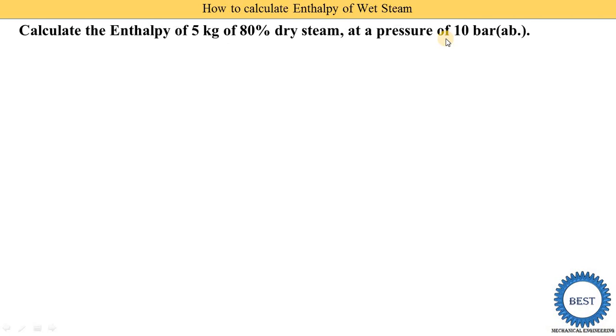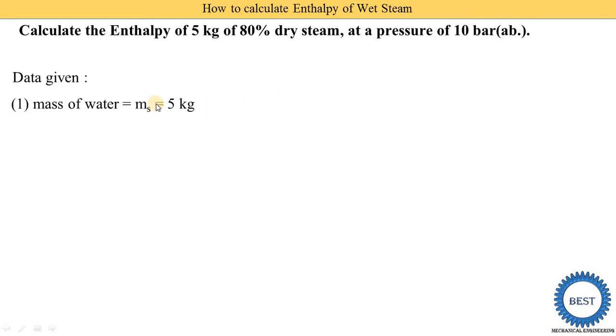The problem statement is: calculate the enthalpy of 5 kg of 80 percent dry steam at a pressure of 10 bars. In the last video we found enthalpy of water where temperature was given, but in this numerical the pressure, mass, and percentage dryness fraction are given. Because the dryness fraction is given, we can understand this is a numerical of wet steam.